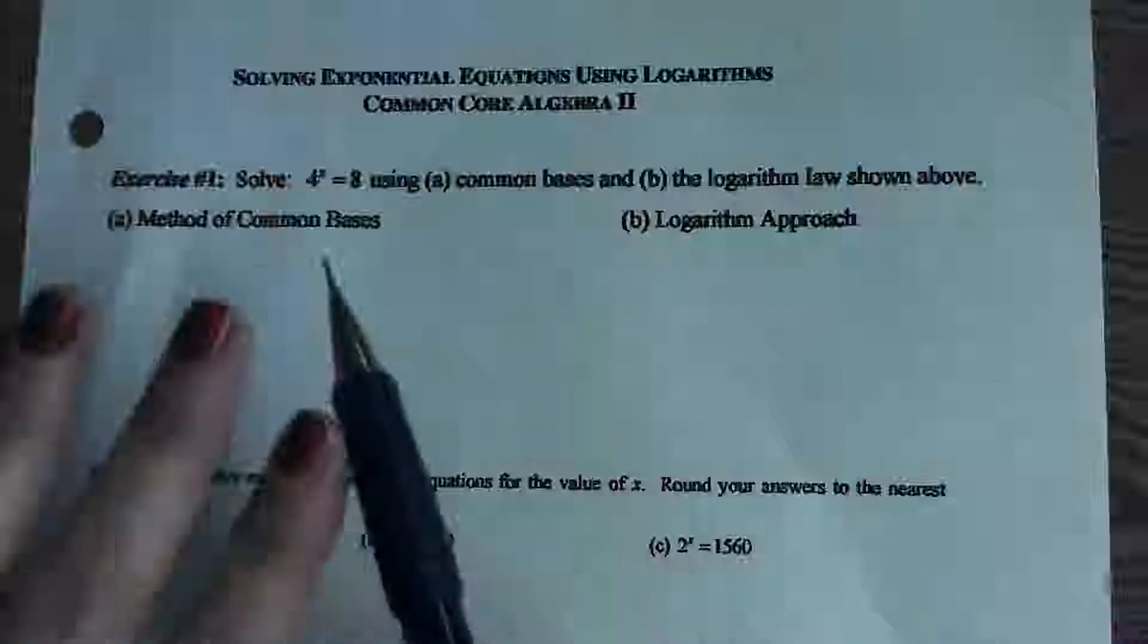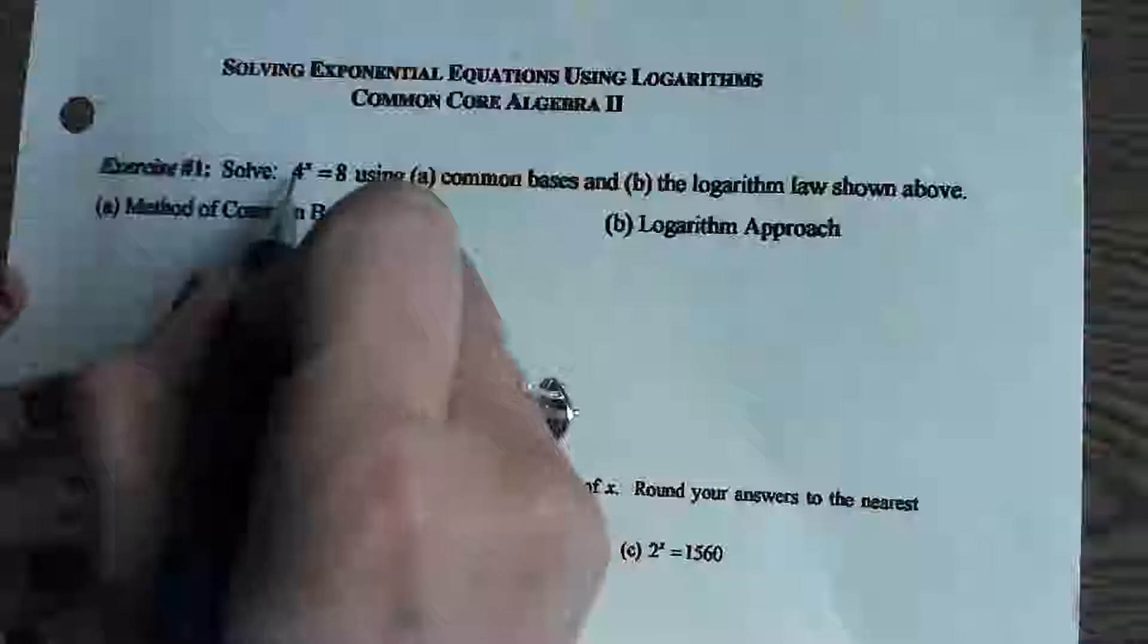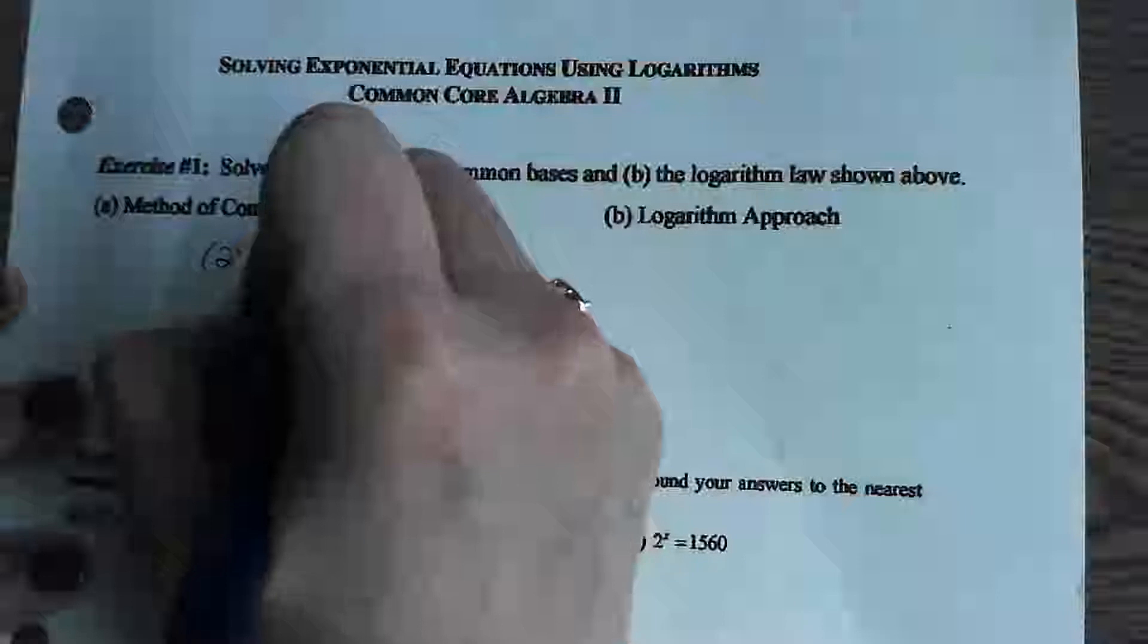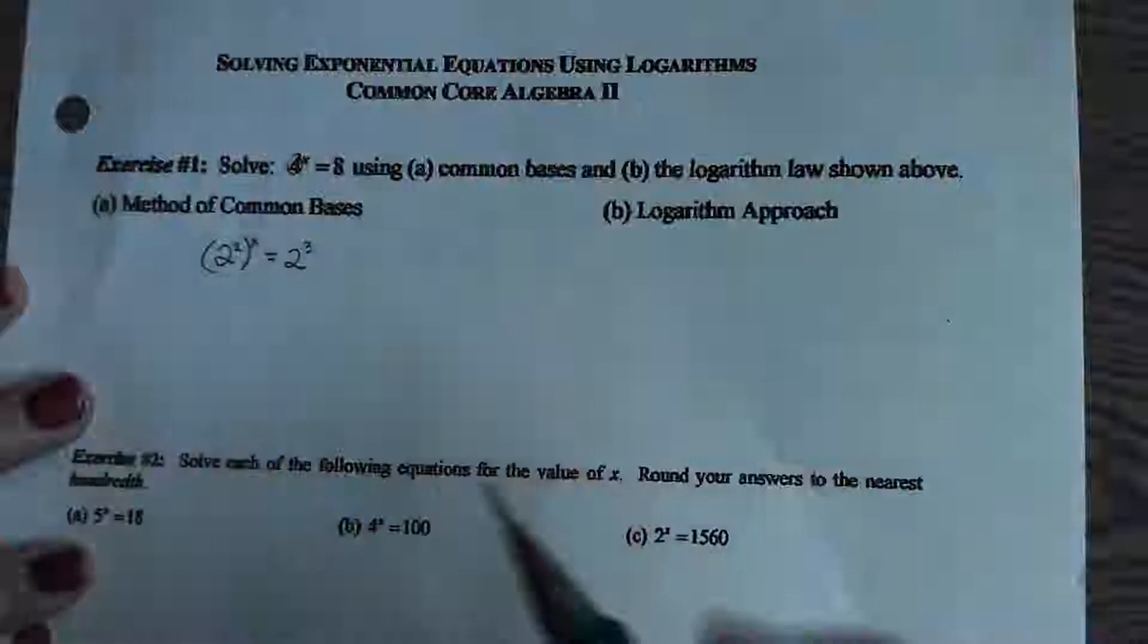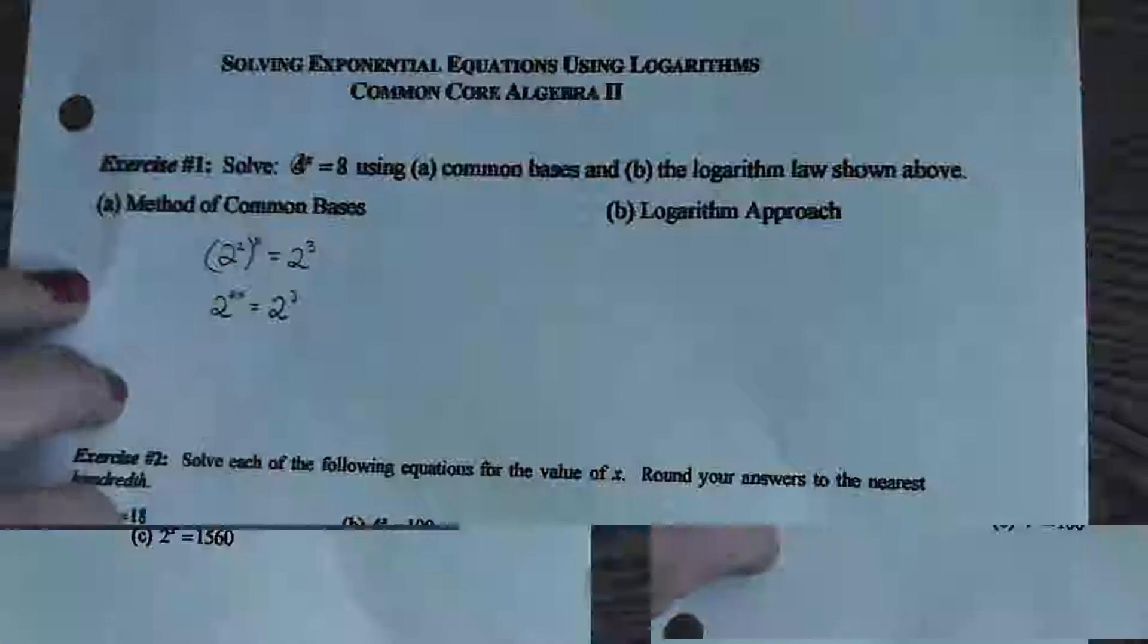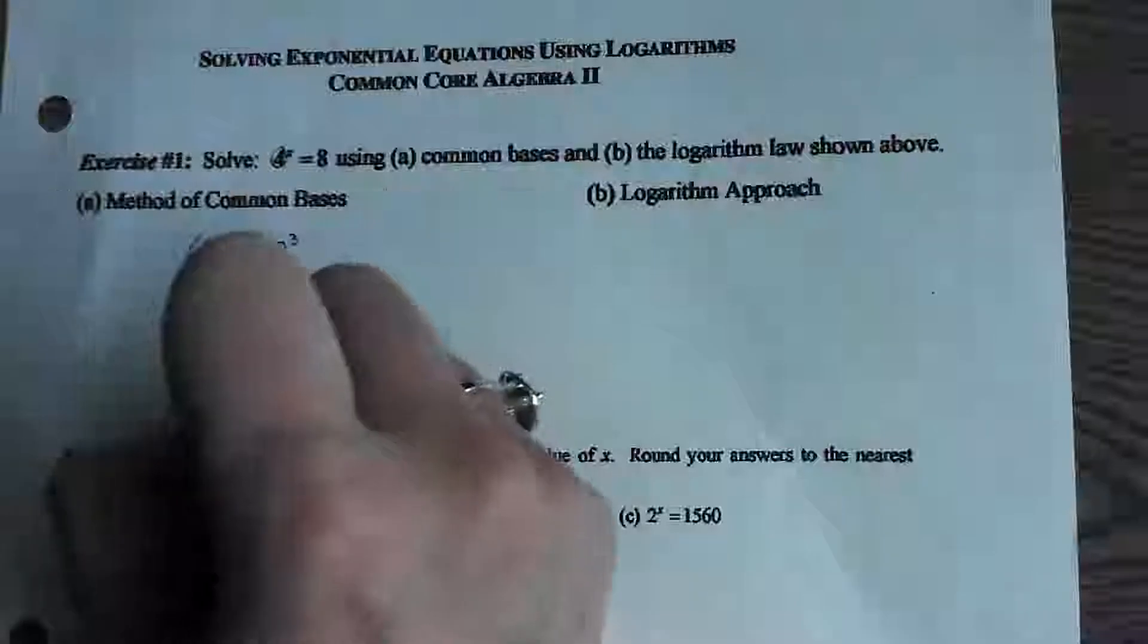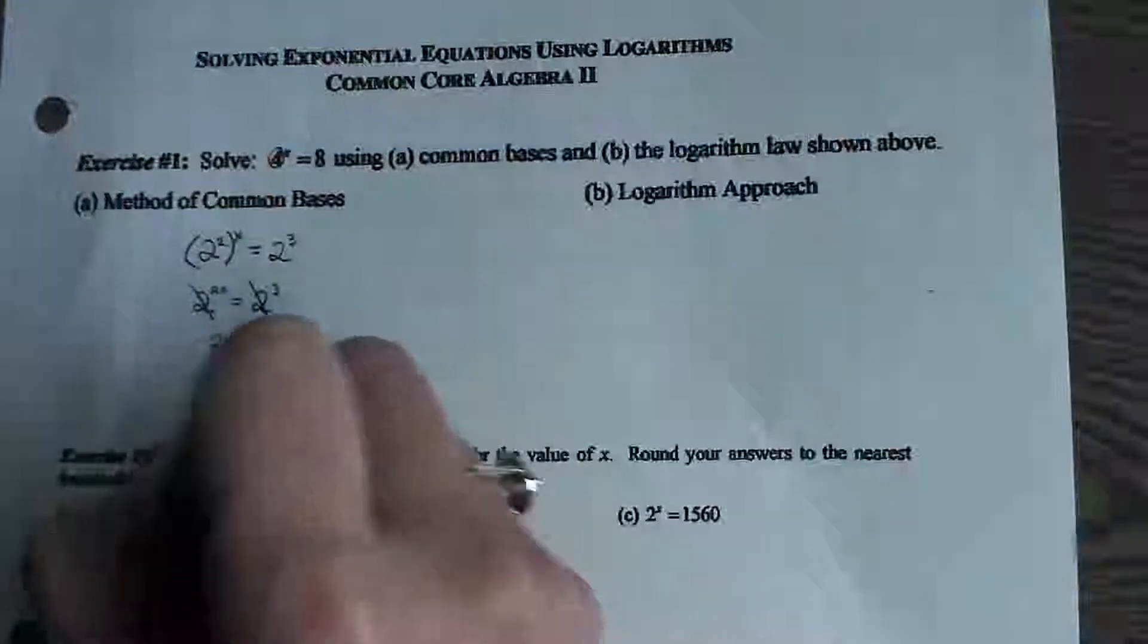But then I'm also going to pretend as if that's not an option because most times it won't be, and I'm going to show you this new approach to solving. So the method of common basis says rewrite your 4 as 2 squared to the x power. Rewrite your 8 as 2 cubed. Your exponent rules say when you raise a power to a power, you multiply, so that's just 2 to the 2x equals 2 to the 3rd. If you have this common base on both sides sitting all by itself, you can cross it out. So we're just solving 2x equals 3. Divide both sides by 2, and x equals 3 halves, and that's your answer.